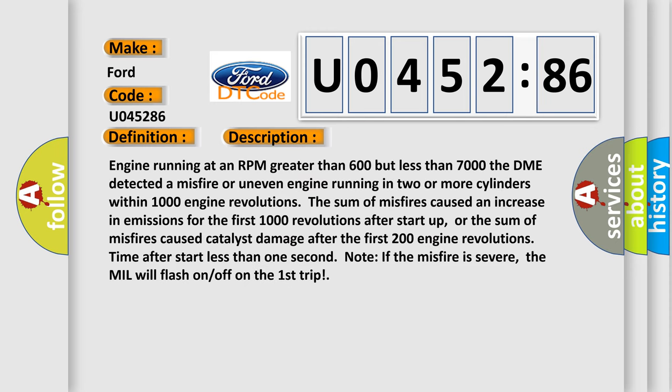And now this is a short description of this DTC code. Engine running at an RPM greater than 600 but less than 7000. The DME detected a misfire or uneven engine running in two or more cylinders within 1000 engine revolutions. The sum of misfires caused an increase in emissions for the first 1000 revolutions after start up, or the sum of misfires caused catalyst damage after the first 200 engine revolutions. Time after start less than one second. Note: If the misfire is severe, the MIL will flash on/off on the first trip.